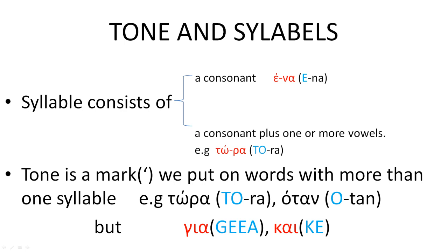This tiny line is called tonos and is used to show which syllable is emphasized when the word is pronounced. However, the word ya, which means for, and the word ke, which means and, don't have any tone. And the reason for that is because they consist of only one single syllable.